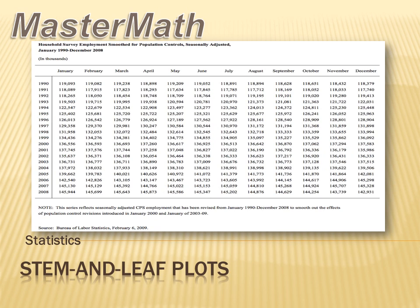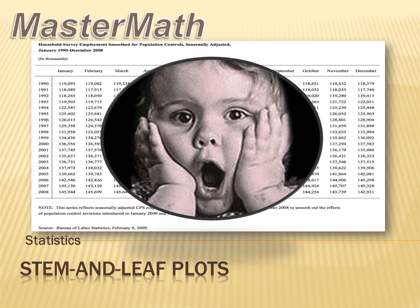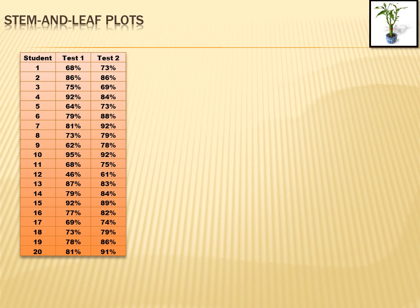Now let's look at an example of some data. This is data collected by the federal government, and there are a lot of numbers there. Looking at that raw data, it doesn't make a whole lot of sense. But let's find a way to make it more understandable. I've started with a slightly smaller data set — a table showing students 1 through 20 and their test scores on test 1 and test 2. Student 2 got an 86 on both tests; student 6 got a 79 and an 88. I can see a bit of a pattern, but it's pretty confusing and needs to be organized.